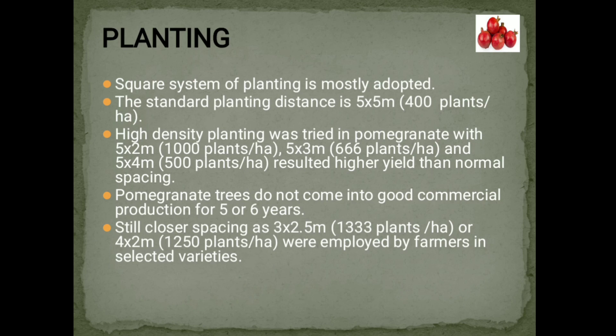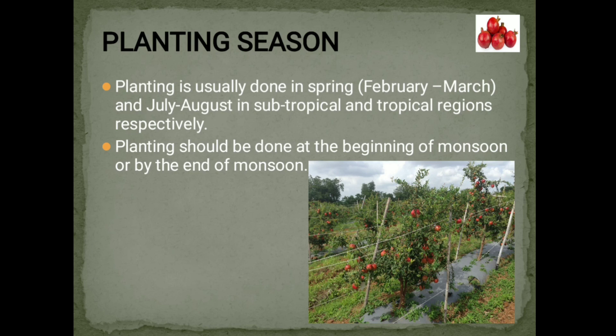Planting Season. Planting is usually done in spring — February–March — and July–August in subtropical and tropical regions respectively. Planting should be done at the beginning of monsoon or by the end of monsoon.